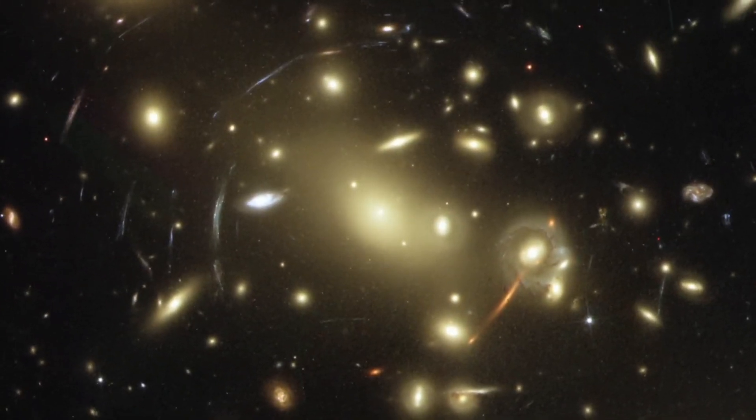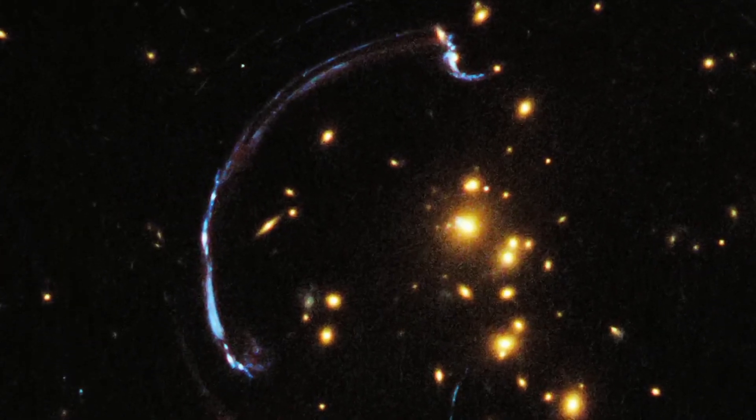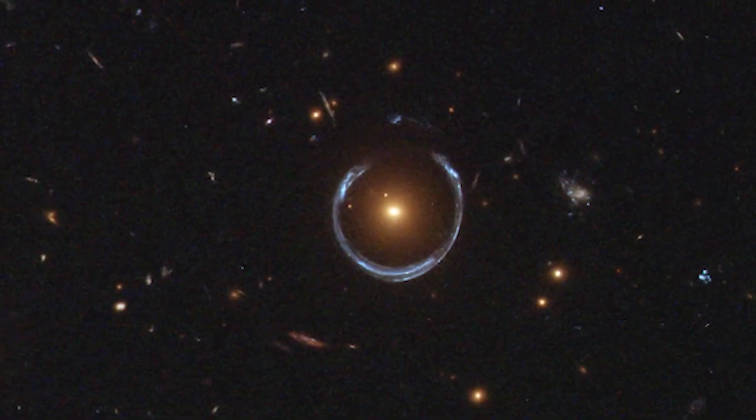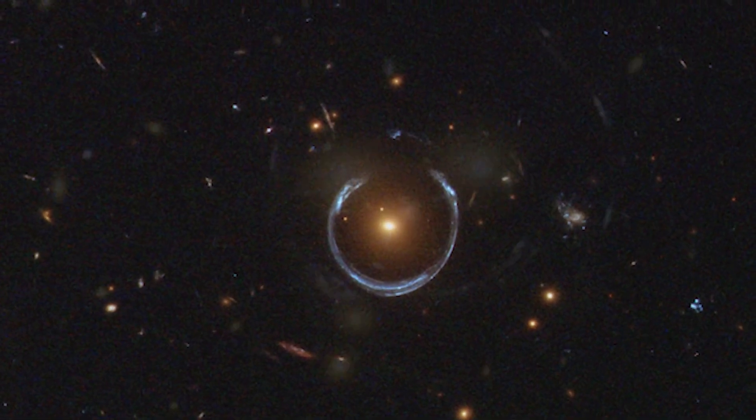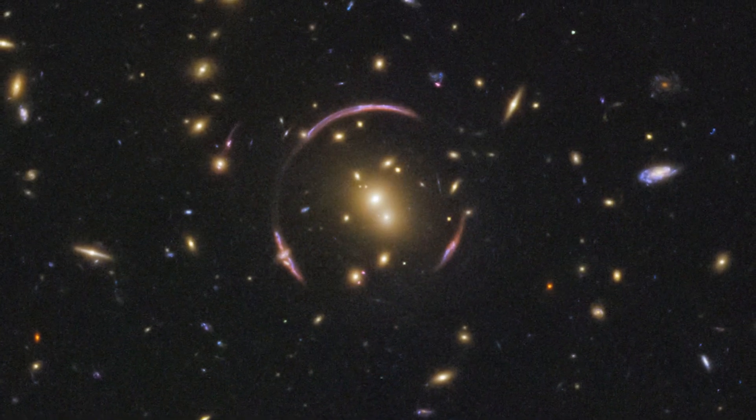In exceptional cases, when these two galaxies are perfectly aligned, the light from the distant galaxy can form a ring around the closer galaxy. This phenomenon is what we know as an Einstein Ring and is one of the most impressive and fascinating phenomena in cosmology.